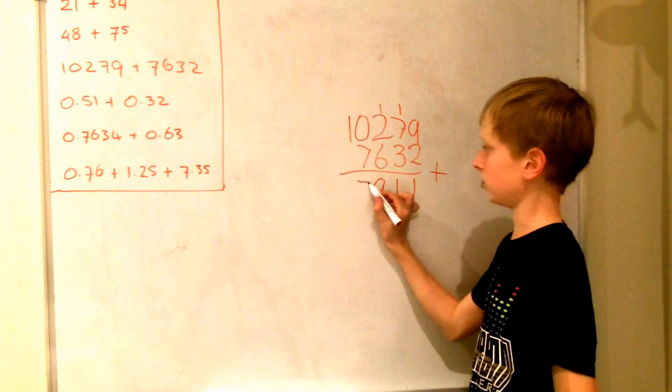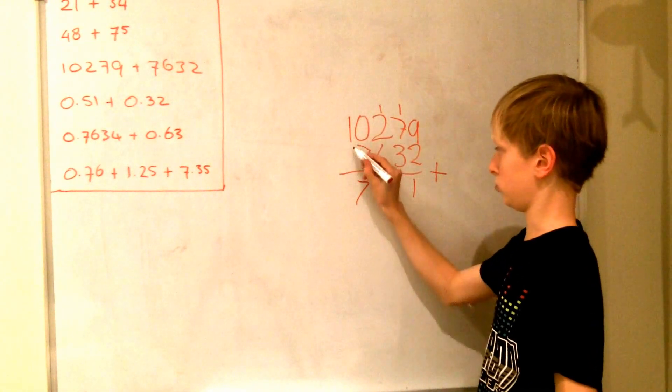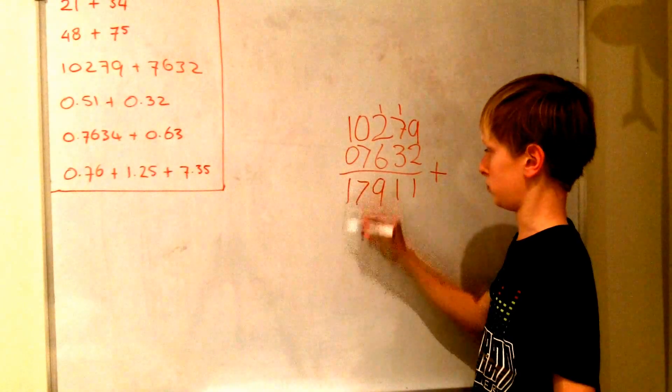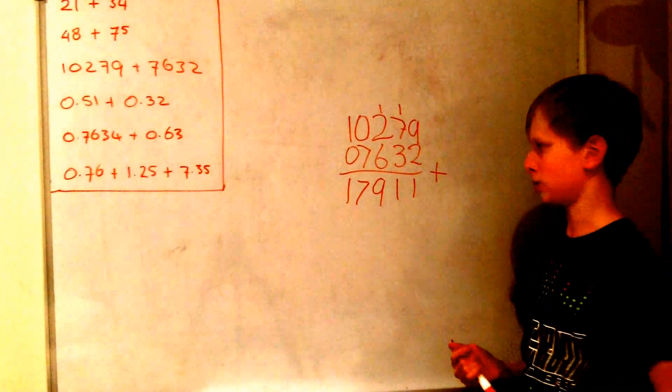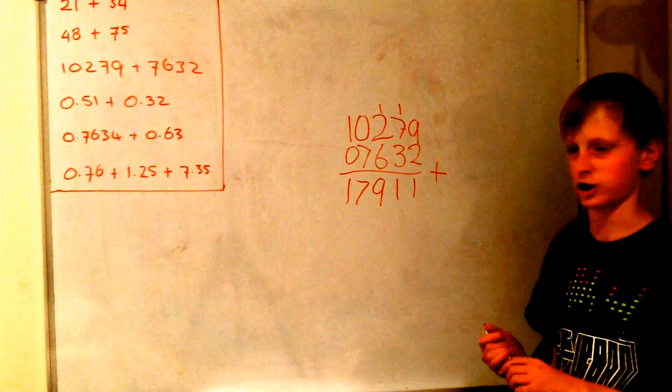0 to 7 is 7. And 1 to 0 is 1. So the answer to this question will be 17,911.